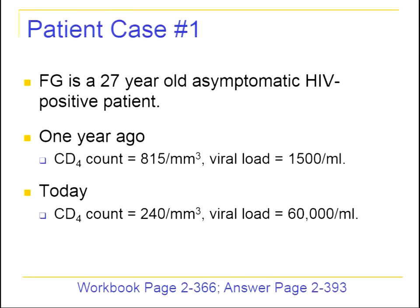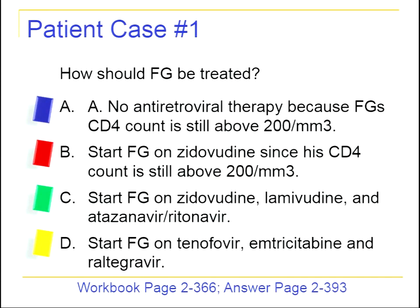Case one: FG is a 27-year-old asymptomatic HIV-positive patient. One year ago, his CD4 count was 815 and viral load was 1,500 per ml. Today his CD4 count is 240 and his viral load is 60,000 copies per ml. How should FG be treated? Options include no therapy, zidovudine alone, zidovudine plus lamivudine plus atazanavir/ritonavir, or tenofovir plus emtricitabine plus raltegravir.